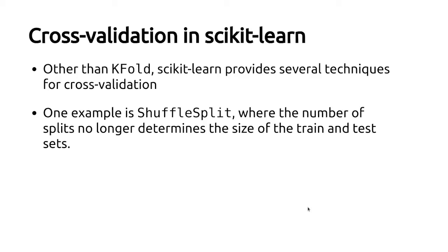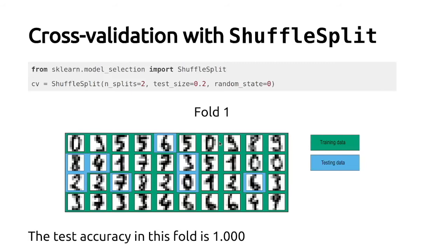But that's one of the many techniques that can be used for cross-validation. Another technique that is provided by scikit-learn is the shuffle split, where the number of splits no longer determines the size of the train and test sets. In the deck of cards analogy, this is equivalent to shuffling the deck, drawing 20% of the cards and using them for testing, and then putting them back to the deck, reshuffling and drawing a new set containing 20% of the cards for testing, and so on.